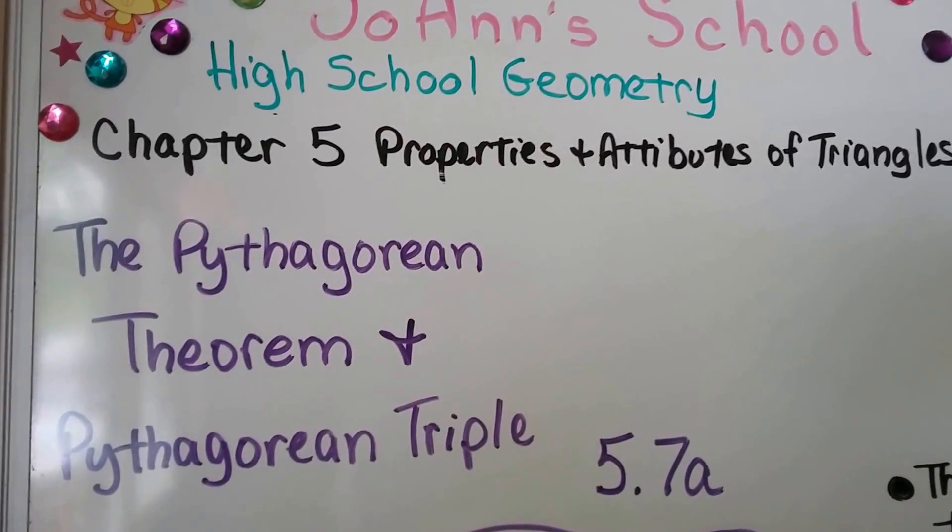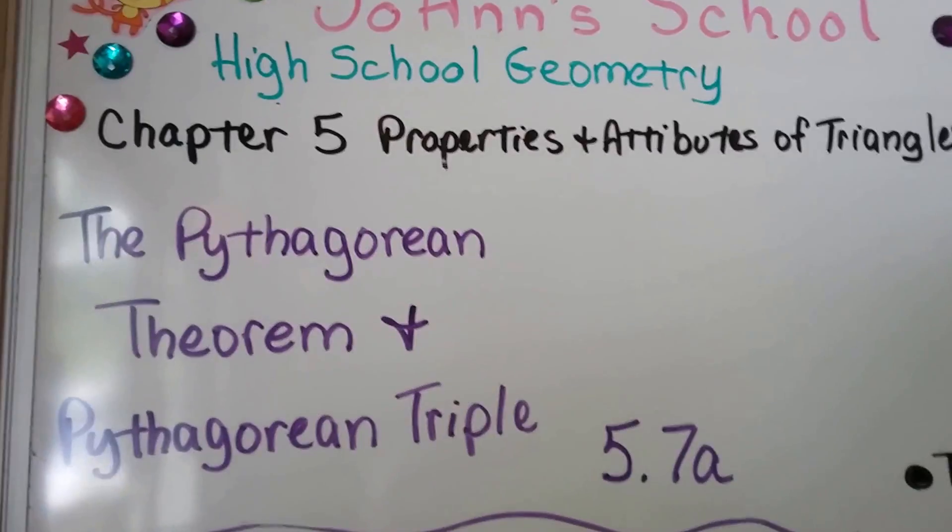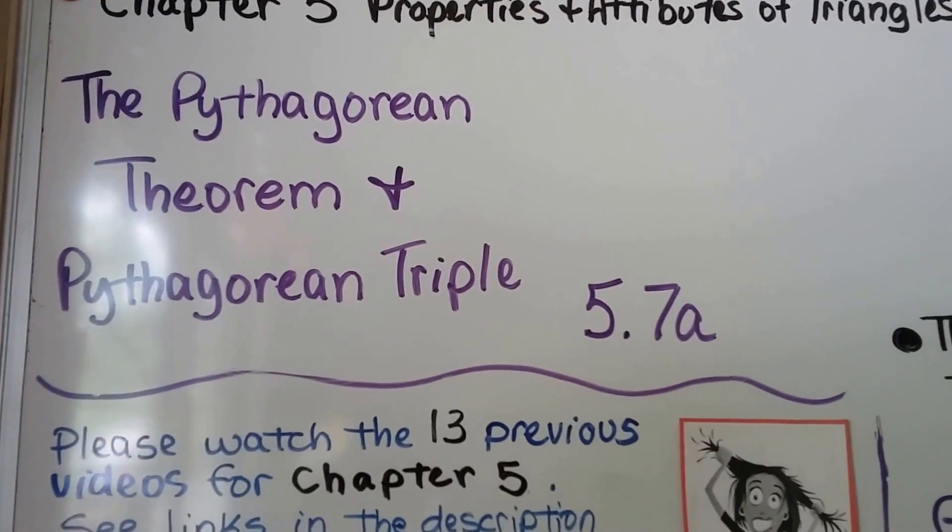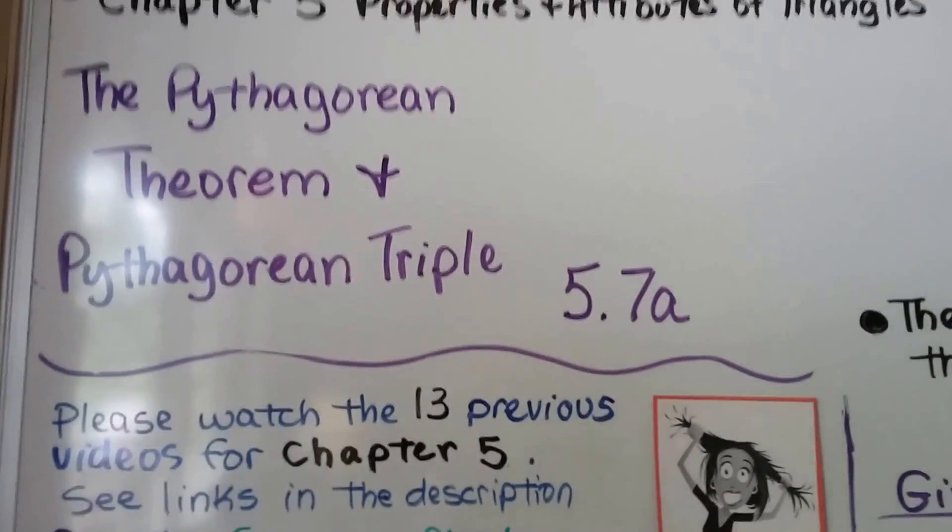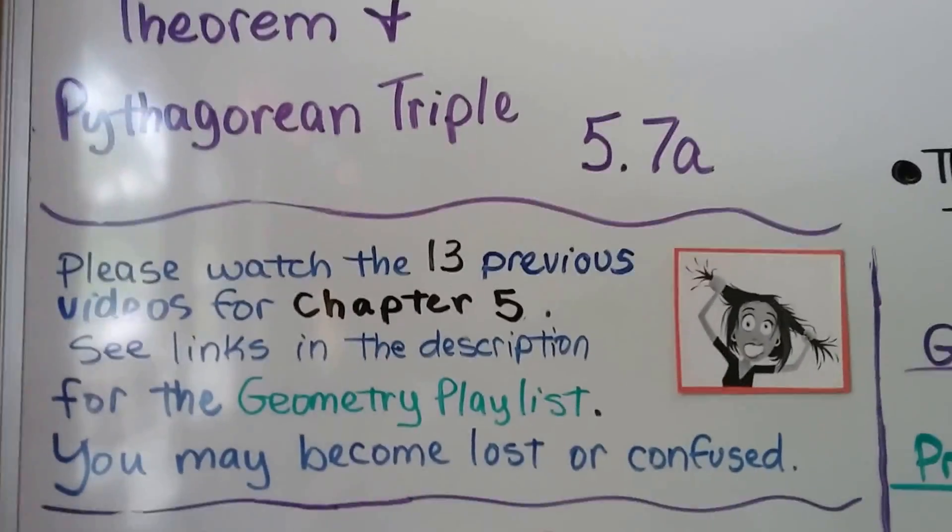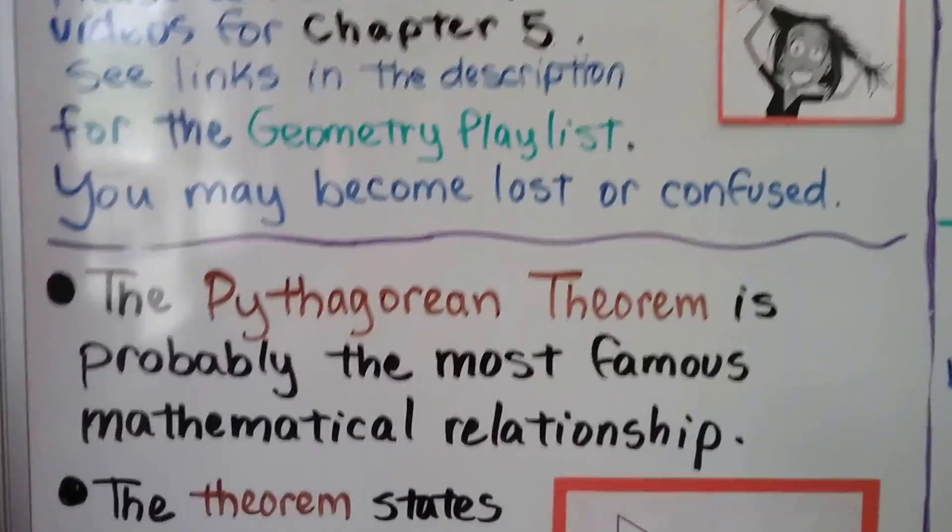The Pythagorean Theorem and Pythagorean Triple. This is 5.7a. We're up to 13 previous videos for chapter 5 about properties and attributes of triangles, and they're in the geometry playlist if you've missed any of them.